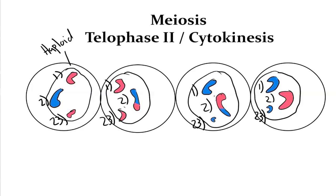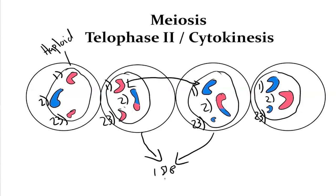Depending on whether we're talking about a male or a female, these gametes are either going to become sperm or an egg — but now they're haploid. They become diploid again when a haploid sperm meets a haploid egg. These chromosomes will then combine during fertilization to make a diploid cell, and you have successfully completed sexual reproduction.